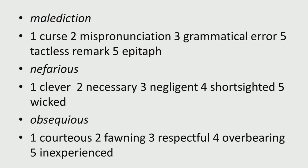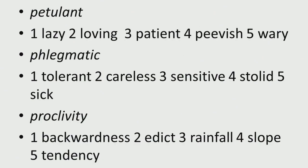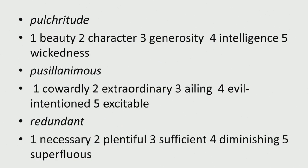'Malediction' — choices: curse, mispronunciation, grammatical error, tactless remark, epitaph. 'Nefarious' — choices: clever, necessary, negligent, short-sighted, wicked. 'Obsequious' — choices: courteous, fawning, respectful, overbearing, inexperienced. 'Petulant' — choices: lazy, loving, patient, peevish, wary. 'Phlegmatic' — choices: tolerant, careless, sensitive, stolid, sick. 'Proclivity' — choices: backwardness, edict, rainfall, slope, tendency. 'Pulchritude' — choices: beauty, character, generosity, intelligence, wickedness.